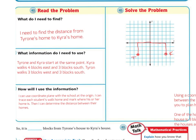To find how many blocks apart they are, I can simply count: one, two, three, four, five, six, seven. So it's seven blocks from Tyrone's house to Kyra's house.